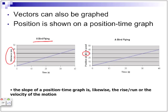The slope of a position time graph, just like we've done before, calculate the rise and run. If we take two points, find the rise and run of a distance time graph, we will find the average speed.